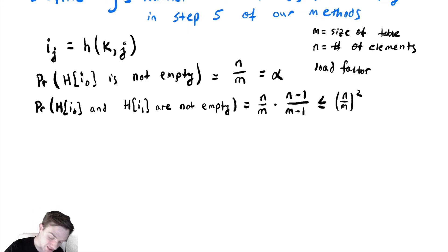This should look familiar from the gambling problem with balls in a bucket. We're going to bound this above by (n/m)^2. Let's continue. What's the probability that h[i_0], h[i_1], and h[i_2] are not empty?